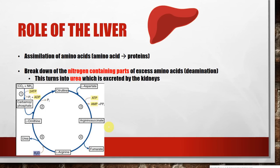So that links us to the role of the liver. First of all, it's important that you understand the liver is important for assimilation of amino acids — that's basically combining amino acids in the right order to make specific proteins, and as we all know, proteins are vital for our survival. Second of all, the liver is important for the breakdown of the nitrogen-containing parts of excessive amino acids, otherwise we call that deamination.